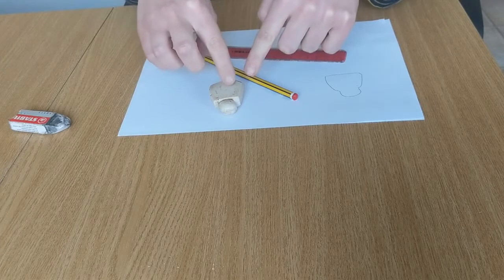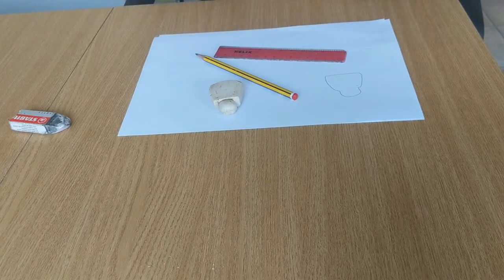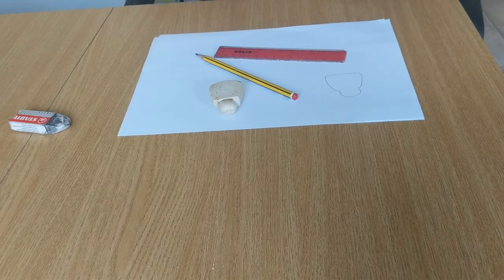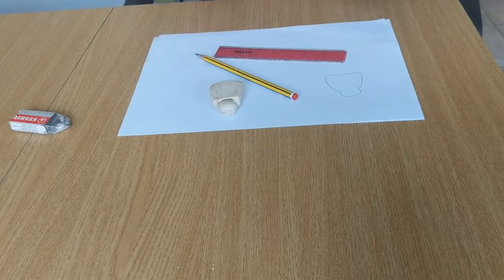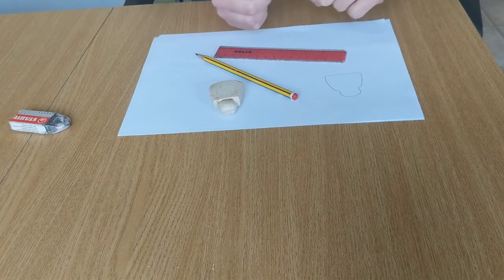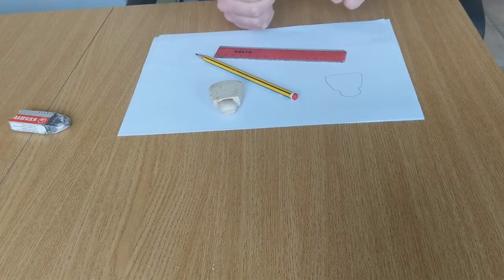So wherever the line on the object changes direction, you want to be making a little dot. So again you can connect all of those dots up. So you have a go and I'll have a show of what I did earlier.